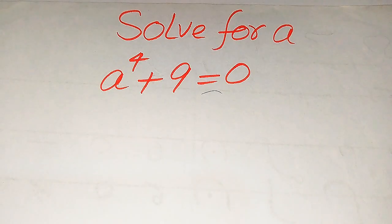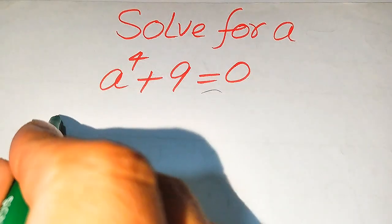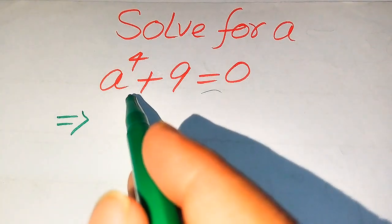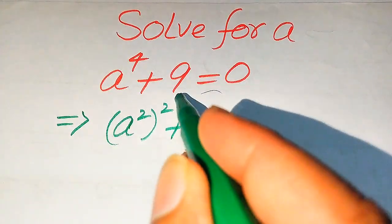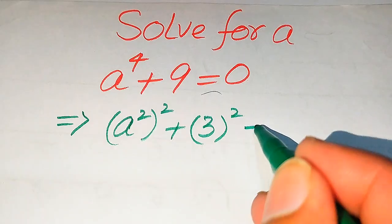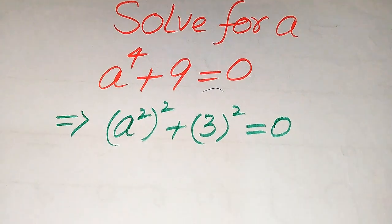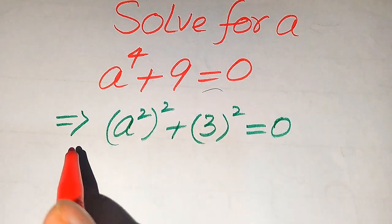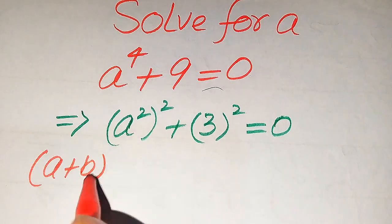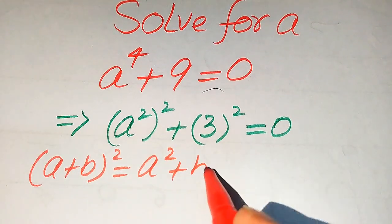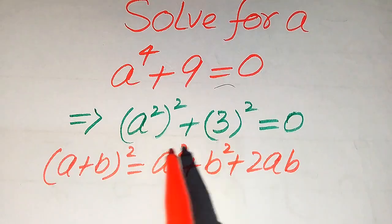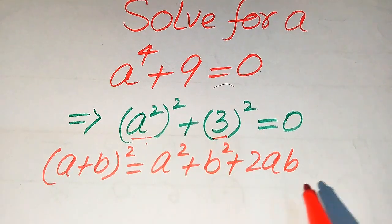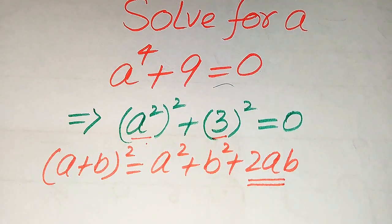For this we just use the completing square technique to solve this problem. We have a to the power of 4 plus 9, and we rewrite this equation as a to the power of 4 written as (a²)² plus 3² equals 0. We know the algebraic formula: (a+b)² = a² + b² + 2ab. Comparing, we have the a² term and the b² term, but we are missing the term 2ab.